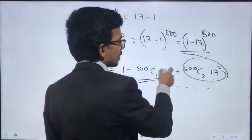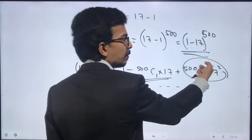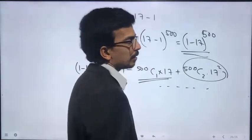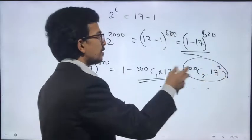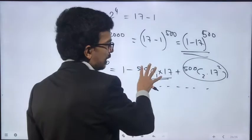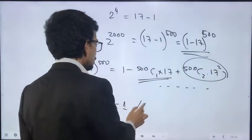If you have 17 and here the number is divisible by 17, this could be a positive number. All the higher powers of 17 are divisible by 17, so the remainder would be 1.